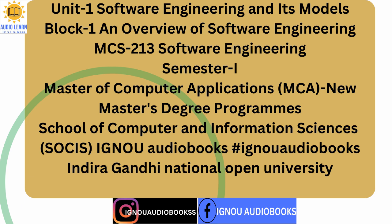1.3 Software Development Models. Software engineering deals with the development of software, so understanding the basic characteristics of software is essential. Software is different from other engineering products in the following ways: 1. Engineering products once developed cannot be changed without redesigning and remanufacturing, whereas in software, changes are done in code. 2. Other engineering products are visible, but software is not. That is why it is said that software is developed but not manufactured — it is first designed then produced, and cannot be manufactured automatically on an assembly line.